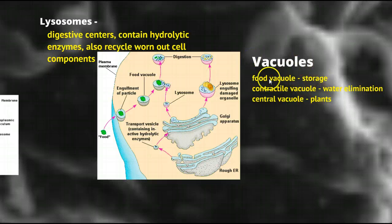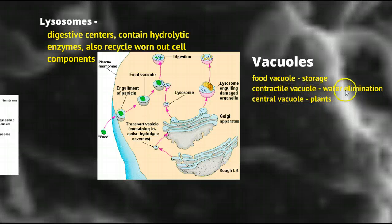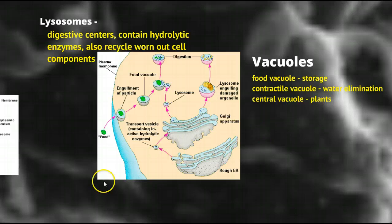And vacuoles are for storage. Food vacuoles store food, contractile vacuoles store and eliminate water, and in plants there's usually a large central water vacuole for water storage.